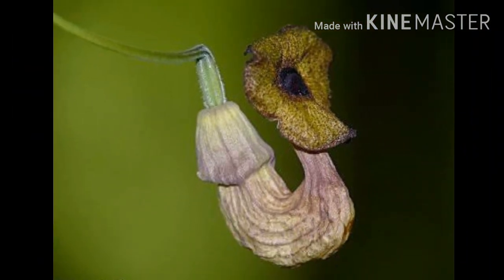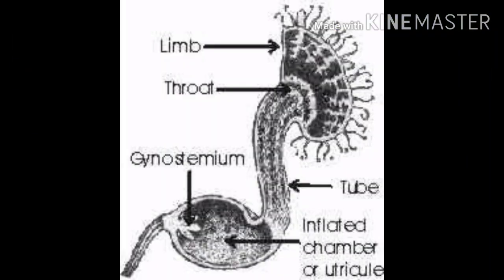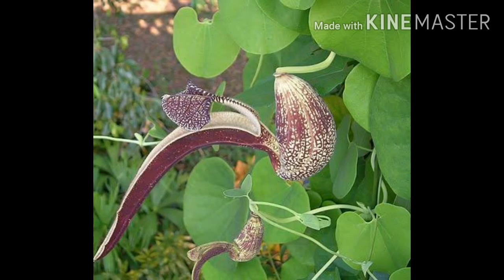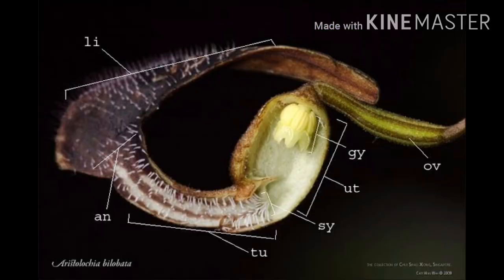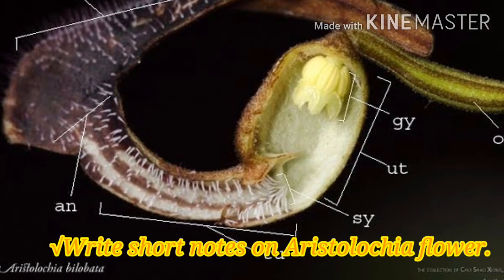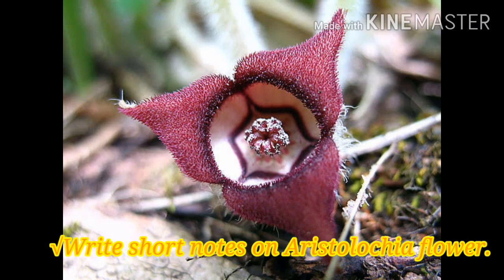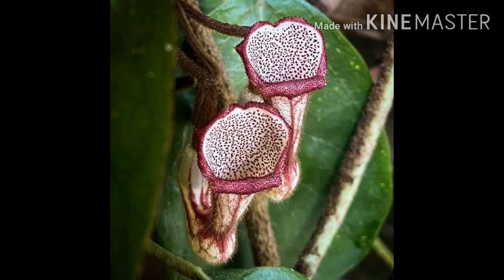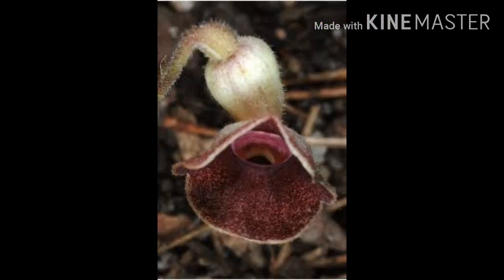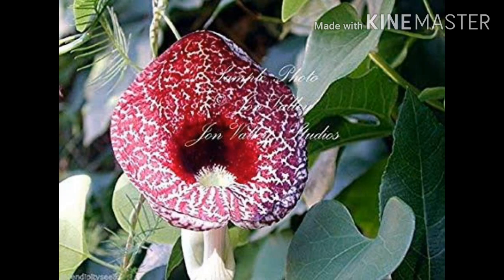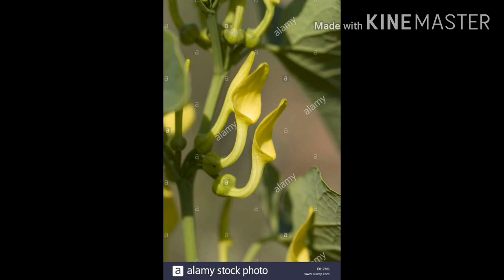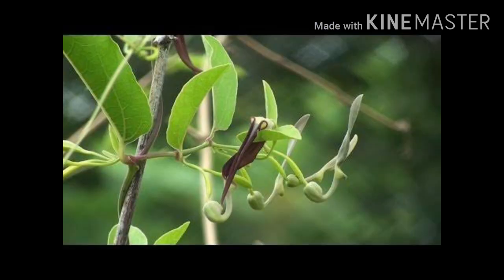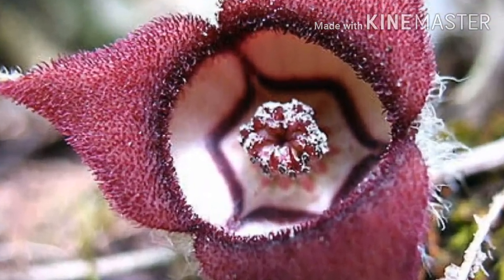The structure of Aristolochia flowers is very peculiar; they are zygomorphic. The perianth members are united to form a pitcher-like structure having a constricted neck, the interior of which is lined with downward-directed hairs. Perianth consists of three tepals, petaloid, variously three-lobed, enlarged to form a bell-like or trumpet-like structure, usually highly colored or unilateral. Sometimes the inner wall consists of three minute teeth called vestigial corolla.